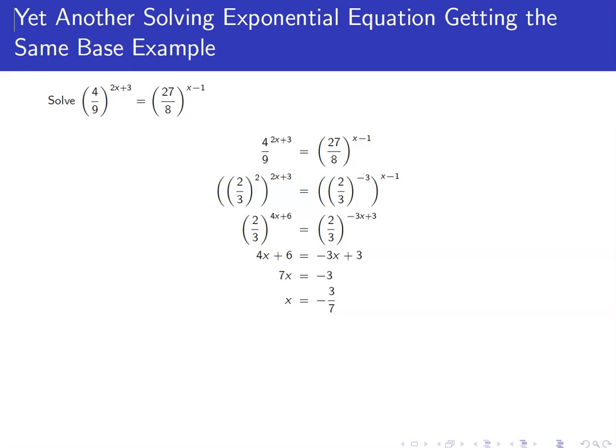So notice that we can rewrite 4 ninths as 2 thirds squared, because 4 is 2 squared and 9 is 3 squared.